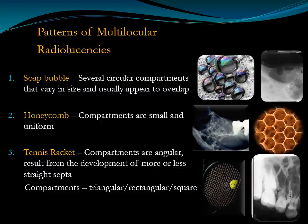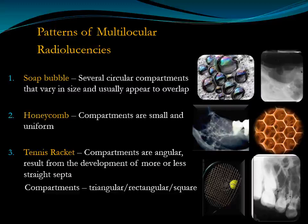Coming to the tennis racket pattern. Here also you have multiple radiolucent areas separated by septa. But in tennis racket pattern, at one, two, or three areas, the septa are straight. In contrast, in soap bubble and honeycomb patterns, the septa are curved. In tennis racket pattern, there will be at least one septa that is straight. That is why it is called tennis racket pattern.